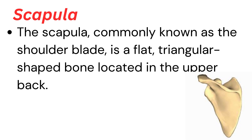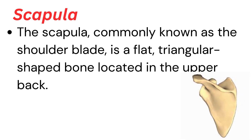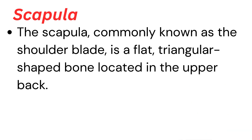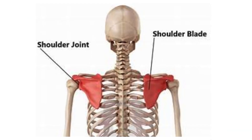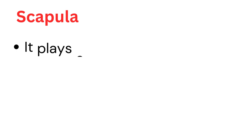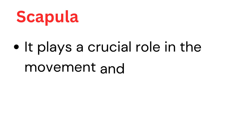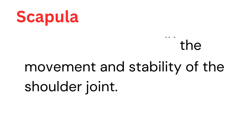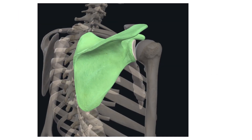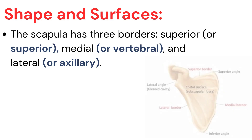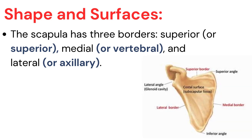The scapula, commonly known as the shoulder blade, is a flat, triangular-shaped bone located in the upper back. It plays a crucial role in the movement and stability of the shoulder joint. Let's delve into the osteology of the scapula.